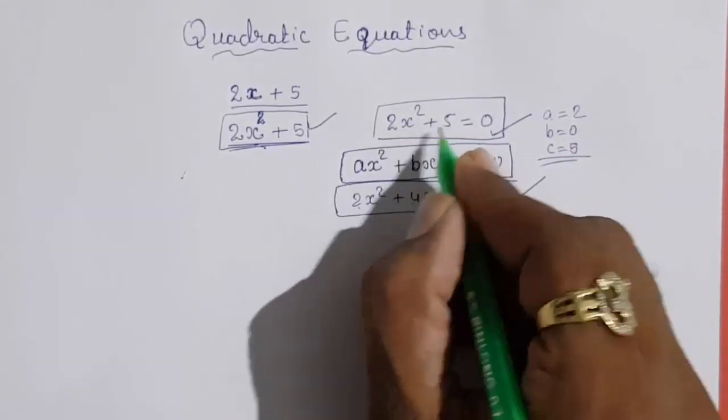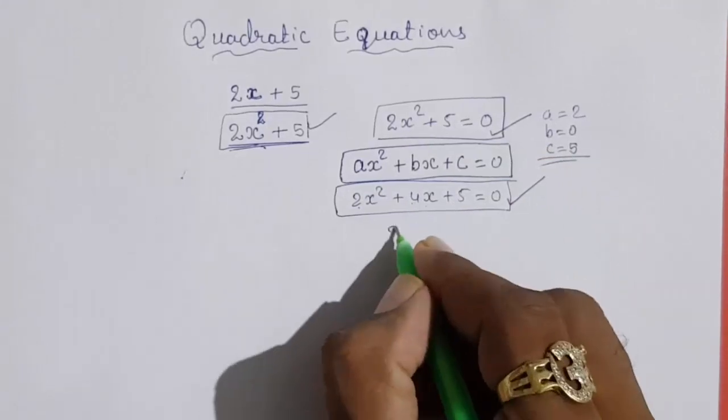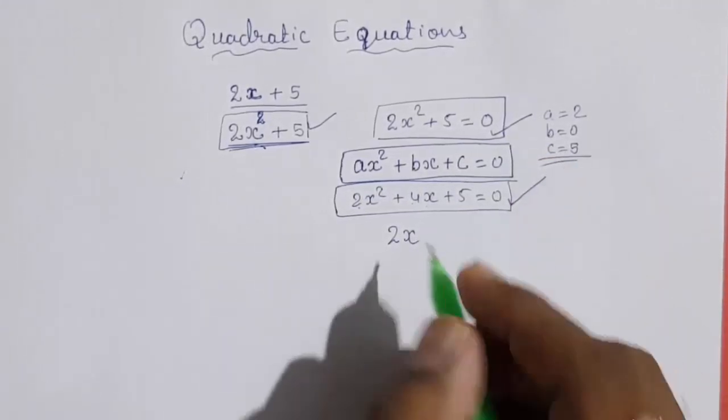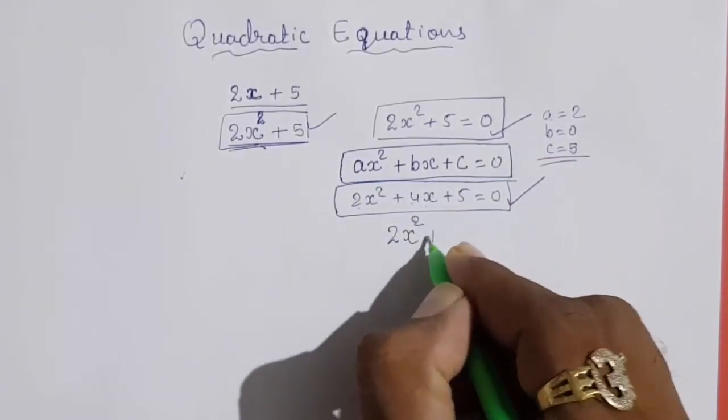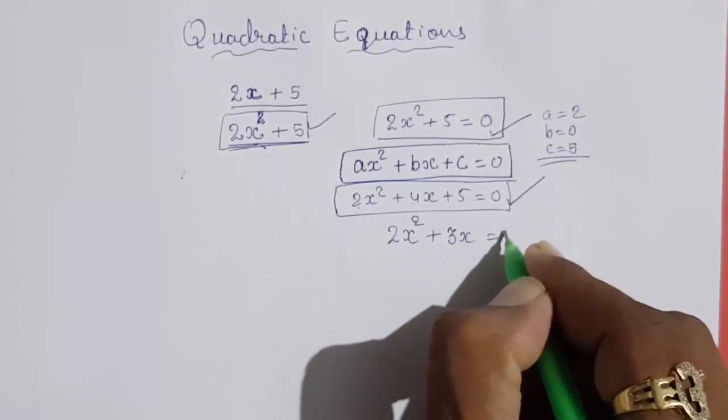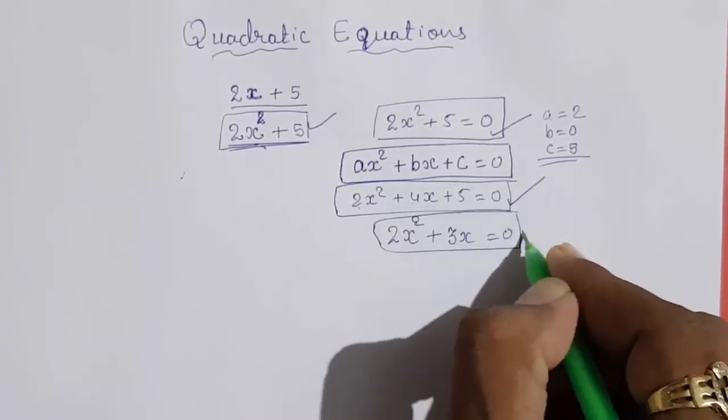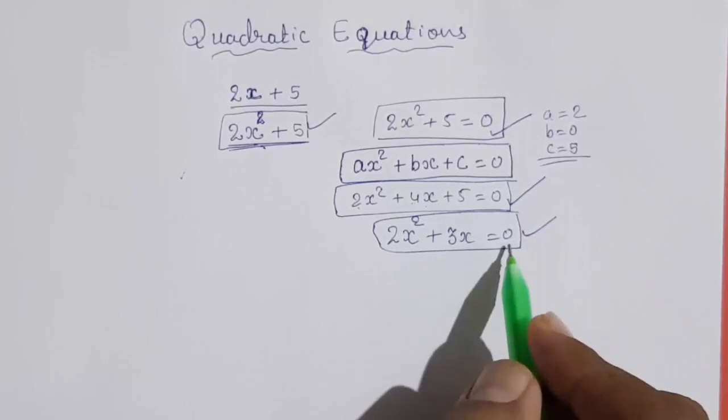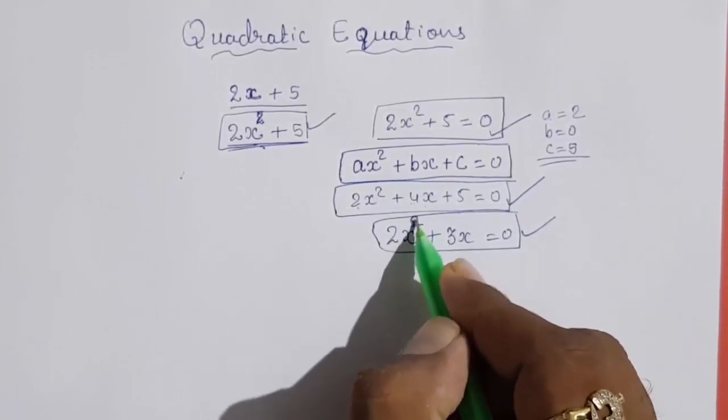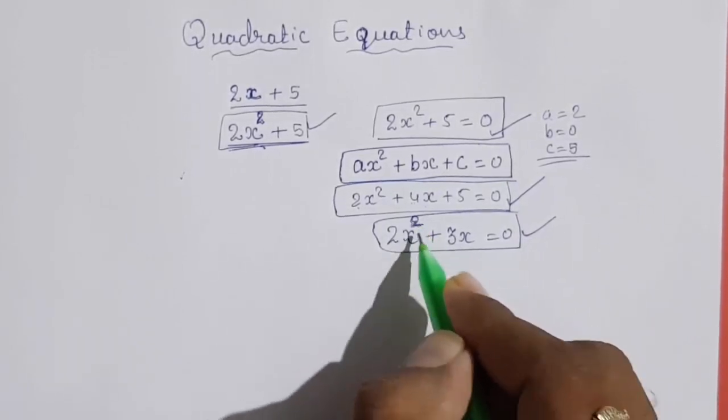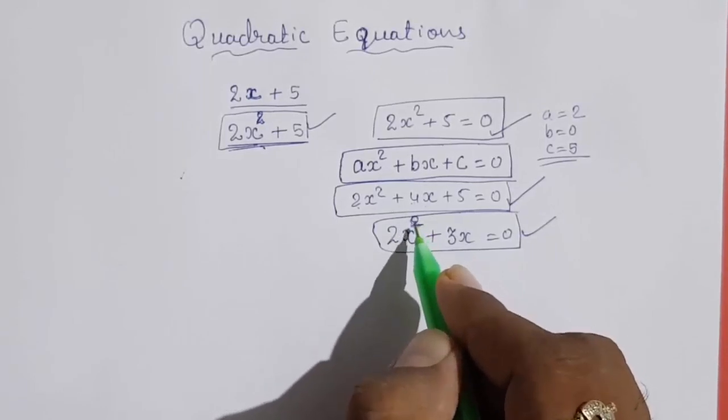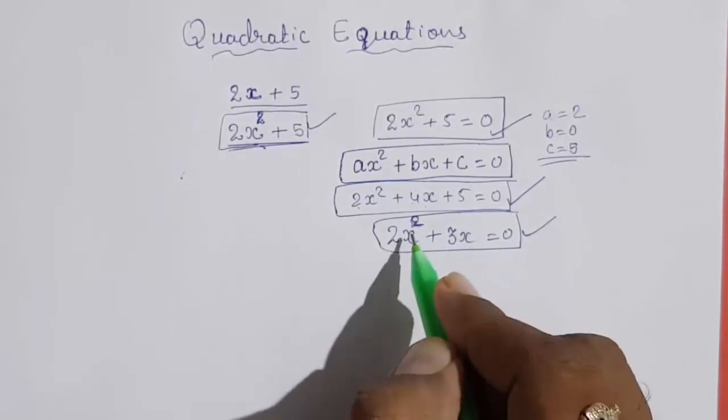Means with two terms also you can form a quadratic equation. Or your c can also equal 0. Means 2x² plus 3x equals 0. This is also a quadratic equation. Just you have to check the power. If power is 2, highest power is 2, or you can say the degree is 2.